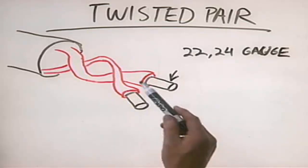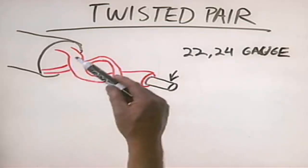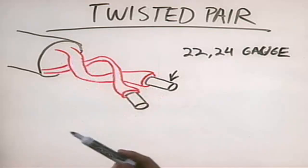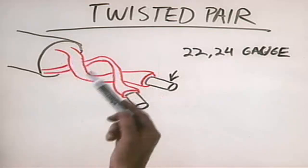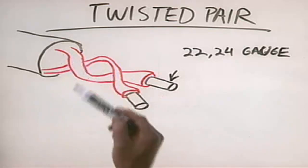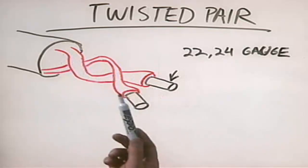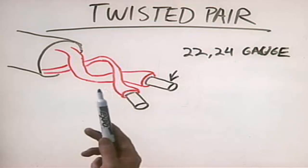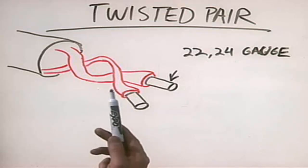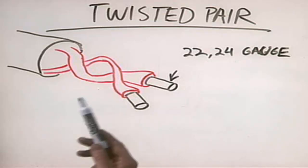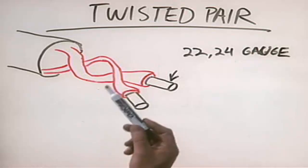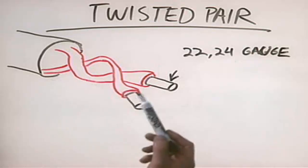As you can see here, we have the wires twisted together. The tighter we twist these wires together, the less electromagnetic interference we experience, and hence the faster we can transfer data through these wires.